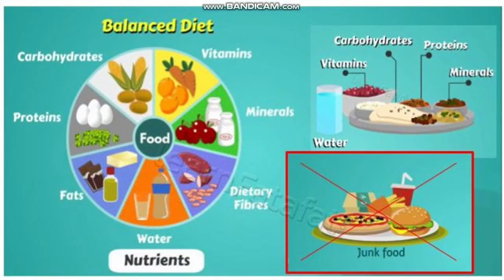A balanced diet should contain a protein group, which includes milk, beans, nuts, eggs, and fish. The milk group also contains milk, curd, cheese, and ice cream. The vegetables and fruit group contains fresh fruits and vegetables like tomatoes, carrots, brinjal, apples, bananas, and oranges. The cereal group includes rice, chapati, and bread. We must also take proper amounts of water and roughage along with these food groups.